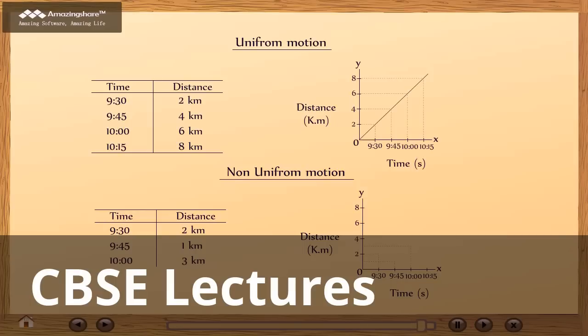At 10:00, it covers the distance of 3 km. And at 10:15, it covers the distance of 2 km. If we join all the points, we do not get a straight line.